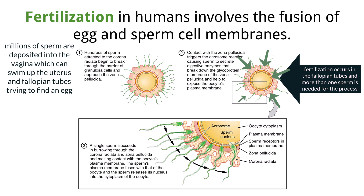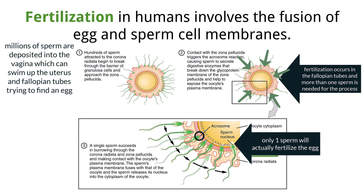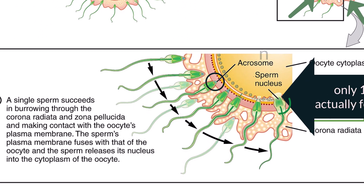It takes many sperm to penetrate the follicle cell layer — the zona pellucida — surrounding the egg. The zona pellucida is a gel composed of glycoproteins. Several sperm will release hydrolytic enzymes found in the acrosome at the tip of the sperm. Only one sperm will reach the plasma membrane first, and that is the sperm that will fertilize the egg. It is important to know that the sperm does not actually enter the egg — the membranes of the sperm and egg fuse, and the haploid nucleus of the sperm enters the egg. The egg produces vesicles to destroy the flagella and mitochondria of the sperm.